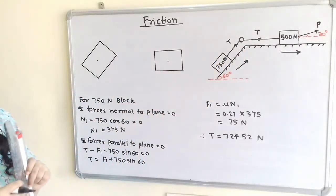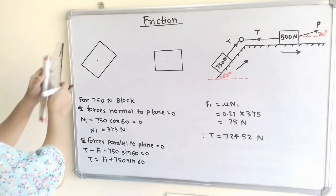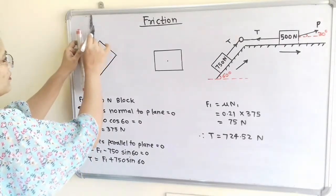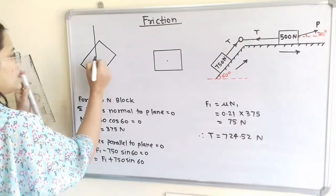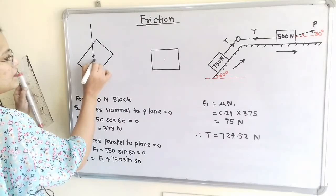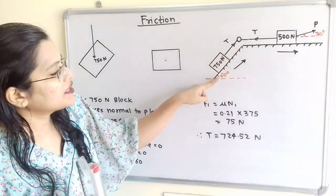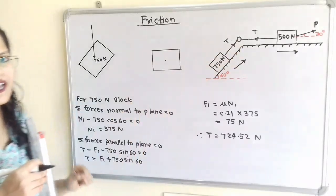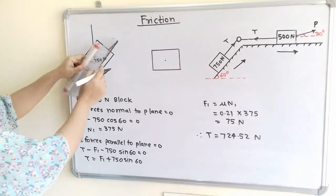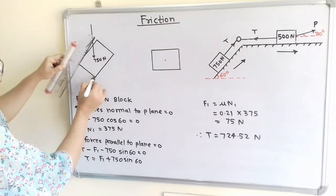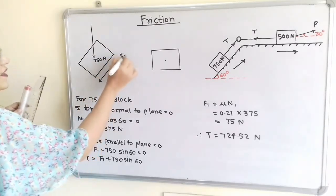We will first consider the 750 N block for the free body diagram. The weight of 750 N always acts in the vertically downward direction passing through the center of the block. We have to show this block at the same inclination. The motion of the block is parallel to the inclined line and in the upward direction, so frictional force F1 is created in the opposite direction of the motion, parallel to the inclined line.